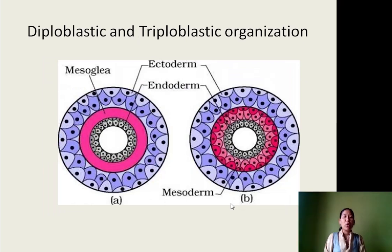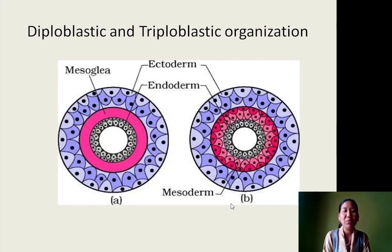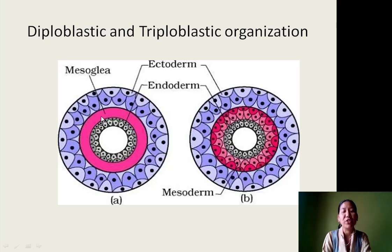Next is diploblastic and triploblastic organization, especially during the embryonic state. In the embryonic state there are germinal layers. An organism can have only two germinal layers — that is ectoderm on the outer side and endoderm towards the inner side — and this is the body cavity. In between them there is a mesoglea layer, which is an undifferentiated tissue. Organisms having only two germinal layers are called diploblastic.